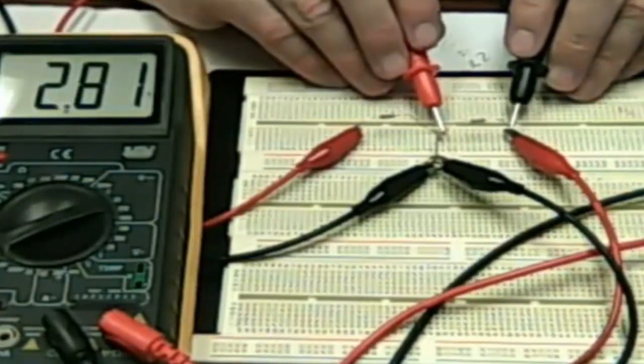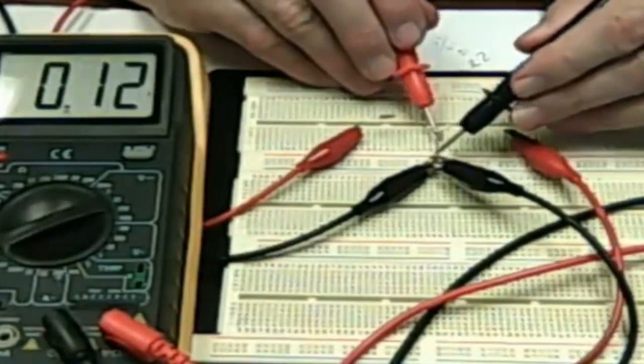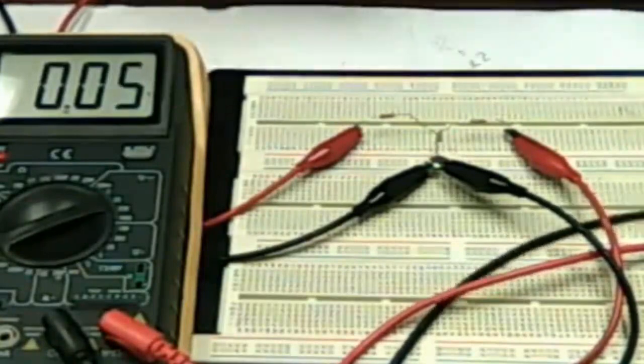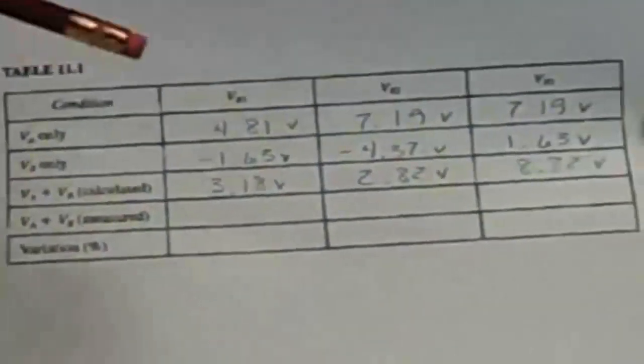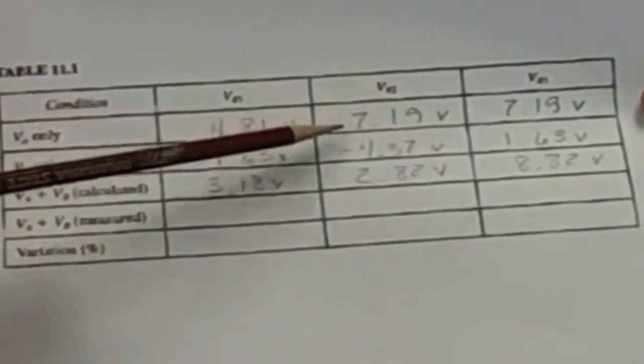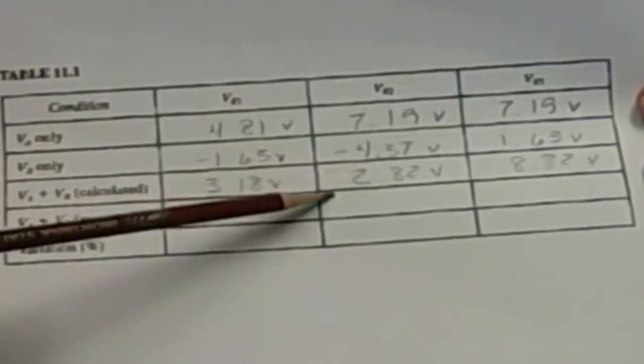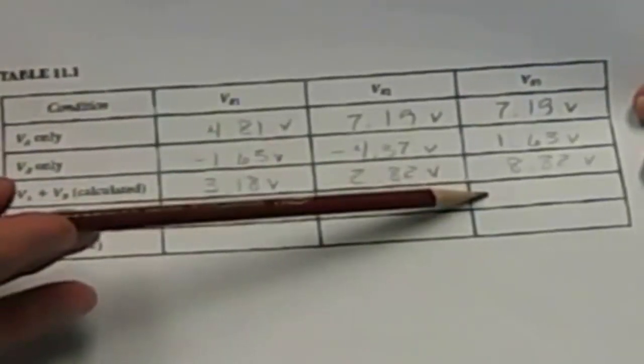Again, keeping the same polarity, I get 2.81 and 8.82. When I look at the computed values, or the values that I computed adding those two voltages together, we're off only a little bit in one of them. So we've got 3.18, 2.81, so we are a hundredth of a volt off for the second measurement, and then 8.82, which again is right on the money.